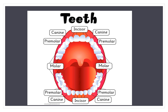Then premolars — there are 8 in number, 4 in each jaw. Teeth between the canine and the molar are called premolars. Then molars are also 8 in number. The flat teeth at the rear, after the premolars, are the molars, and they help in grinding food. So if you total it: 8 plus 8 plus 8 plus 4 gives you 28.